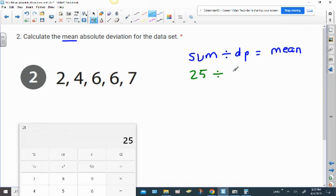Alright, so the next step is divide by how many data points there are. One, two, three, four, five data points. Now again, that's mental math. 25 divided by five would give us a mean of five.